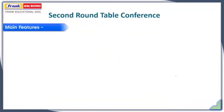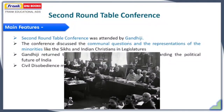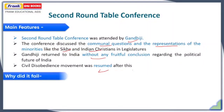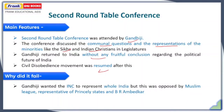The main features of the Second Roundtable Conference were that it was attended by Gandhiji. The conference discussed communal questions and the representation of minorities like Sikhs and Indian Christians in the legislature. Gandhiji returned to India without any fruitful conclusion regarding the political future of India. The Civil Disobedience Movement was then resumed as a personal civil disobedience movement which did not include the masses. The Second Roundtable Conference had no conclusion because Gandhiji wanted the Indian National Congress to represent the whole of India, but this was opposed by the Muslim League, representatives of the princely states, and B.R. Ambedkar, as all of them wanted their own separate electorates for separate representation.